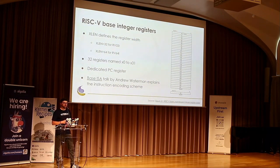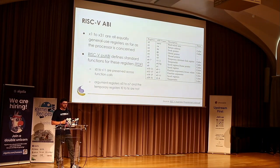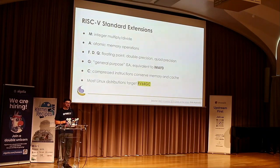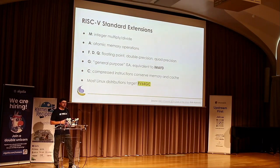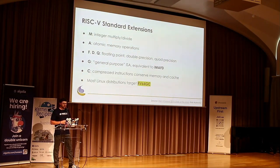If you want to learn more about instruction encoding, there's a great talk from Andrew Waterman, one of the original RISC-V creators. Registers aren't usually described as X1 through X31 — with the ABI, we use different names according to the calling convention. Standard extensions include: M for integer multiply and divide, A for atomic memory operations (important for OS and multi-processor systems), F/D/Q for floating point precisions, G as shorthand for IMAFD, and C for compressed 16-bit instructions that save memory and cache. For Linux, we target RV64GC, which most distributions use.